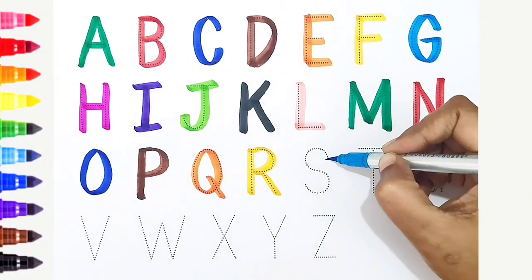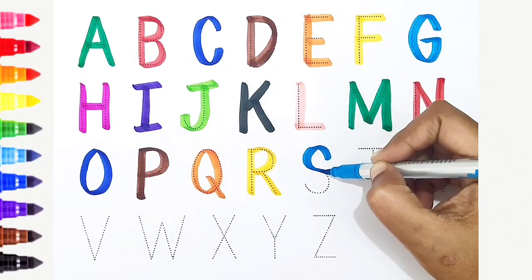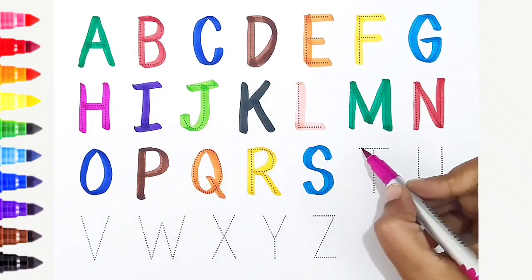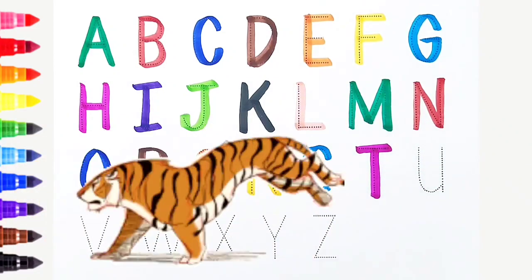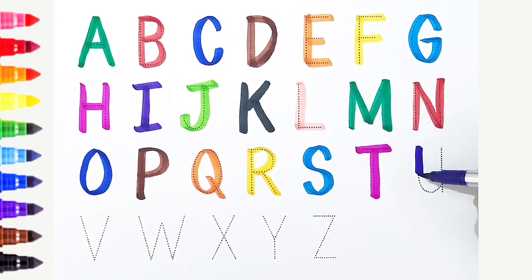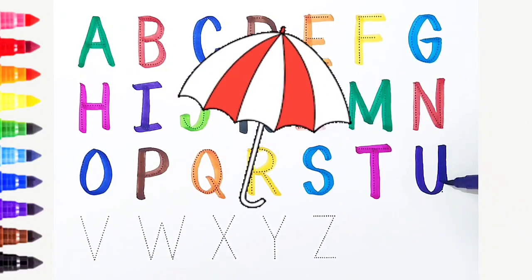S, light blue color, S is for sun. T, dark pink color, T is for tiger. U, violet color, U is for umbrella.